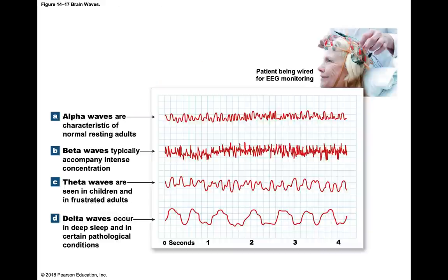Next we'll talk about the EEG, or electroencephalogram, which is a printed recording of electrical activity of brain waves. There are different types of brain waves: alpha waves, beta waves, theta waves, and delta waves.